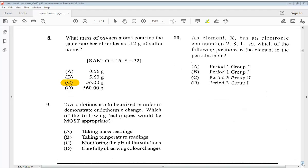9. Two solutions are to be mixed in order to demonstrate endothermic change. Which of the following techniques would be most appropriate? A. Taking mass readings, B. Taking temperature readings, C. Monitoring the pH of the solutions, D. Carefully observing color changes. So the answer for that is B. Taking temperature readings. 10. An element X has an electronic configuration 2, 8, 1. At which of the following position is the element in the periodic table? Is it A. Period 1, group 2, B. Period 1, group 1, C. Period 3, group 2, D. Period 3, group 1. So the answer is D.